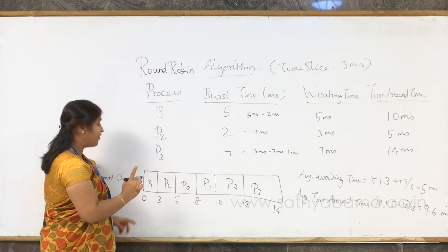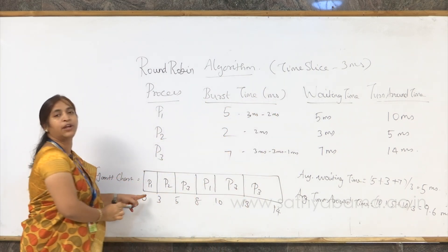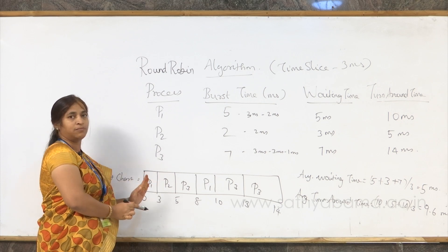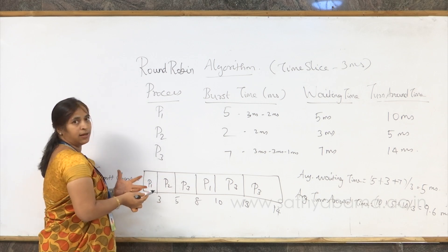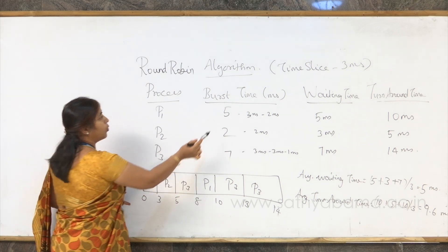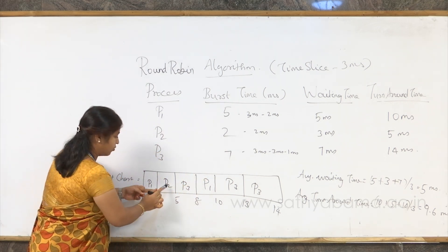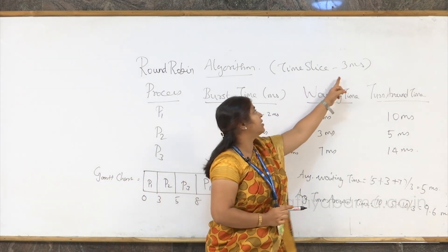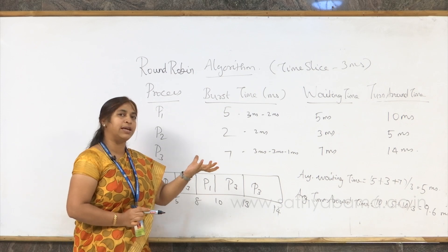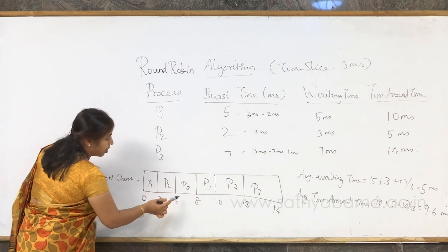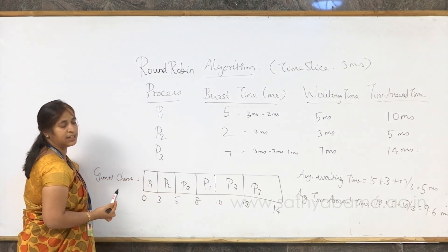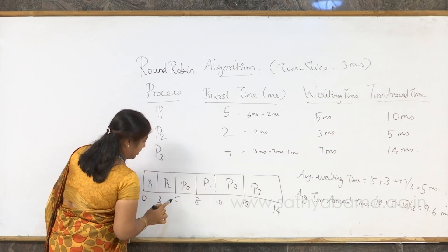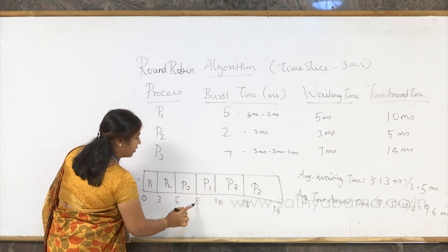After 3 milliseconds, whether the task is over or not, the CPU is taken back from P1. P2 is next in the queue, so CPU is allotted to P2. P2's actual burst time is 2 milliseconds, so even though the time slice is 3 milliseconds, P2 only gets 2 milliseconds since that is all it needs to complete. After P2 completes at the 5th millisecond, P3 gets the CPU for 3 milliseconds, until the 8th millisecond.